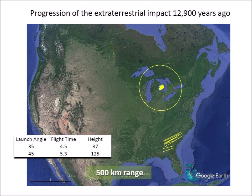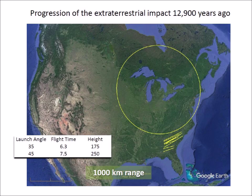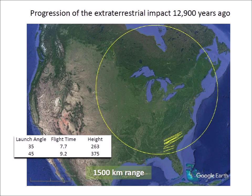The extraterrestrial impact in Saginaw Bay during the Ice Age ejected pieces of ice in ballistic trajectories with speeds of 3 to 4 kilometers per second. Pieces of ice launched at 35 degrees reached a 500-kilometer range in 4.5 minutes with a maximum height of 87 kilometers. Ice pieces launched at 45 degrees had a flight time of 5.3 minutes with a height of 125 kilometers. The east coast came within range of the ice boulders from 6 to 7 minutes after the extraterrestrial impact. North and South Carolina were hit by the ice boulders between 7 to 9 minutes after the extraterrestrial impact in Saginaw Bay.